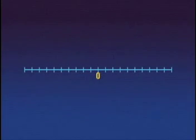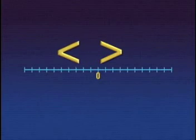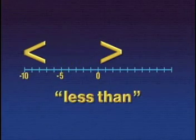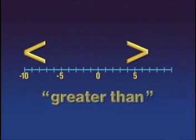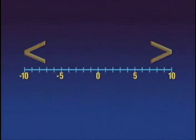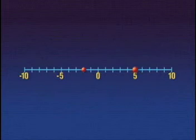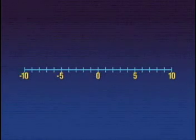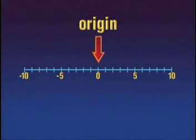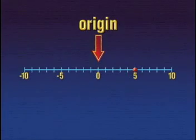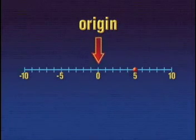Sometimes when scientists compare data they use number lines. On a number line, the number to the left is always less in value than the number to the right. You can graph integers on a number line by drawing a dot. For example, let's graph five on the number line — start at the origin and move five spaces to the right. Now let's graph negative three — start at the origin and move three spaces to the left.